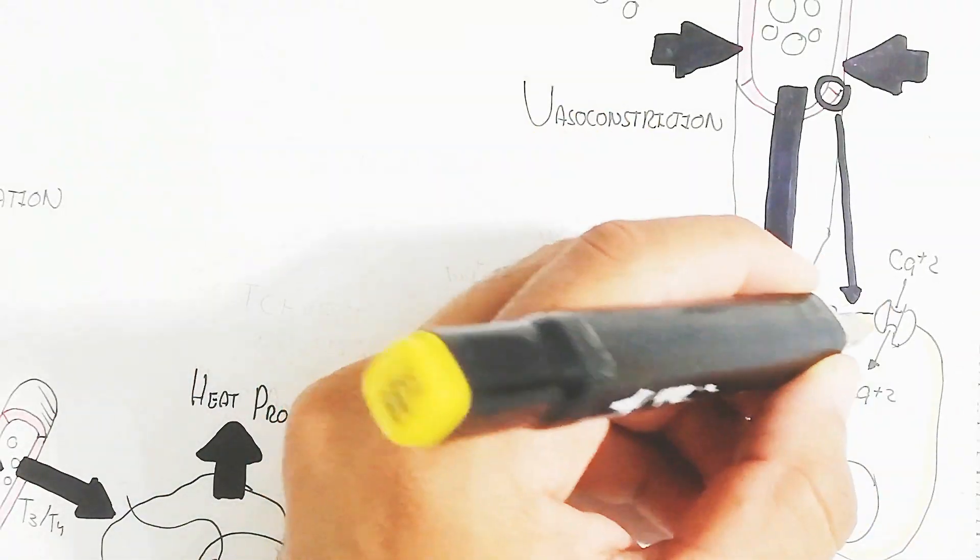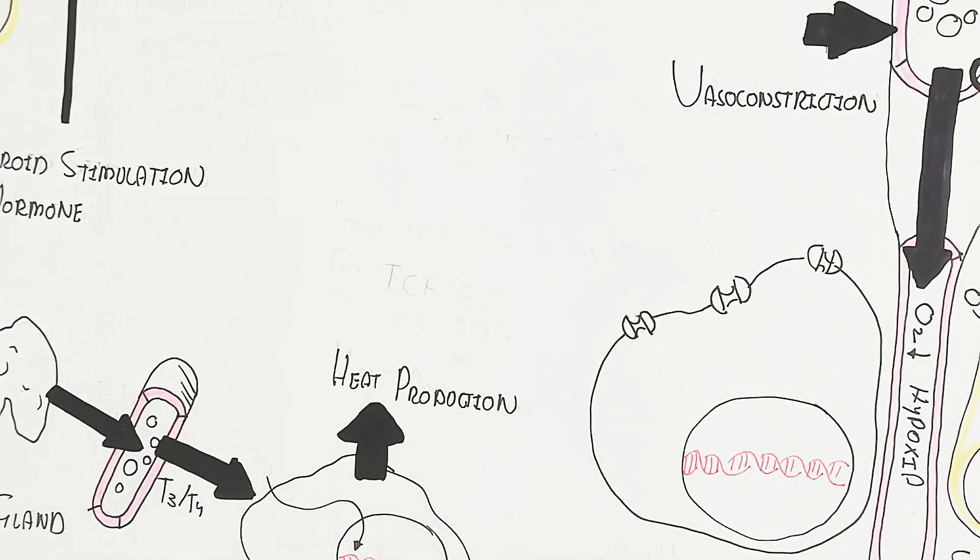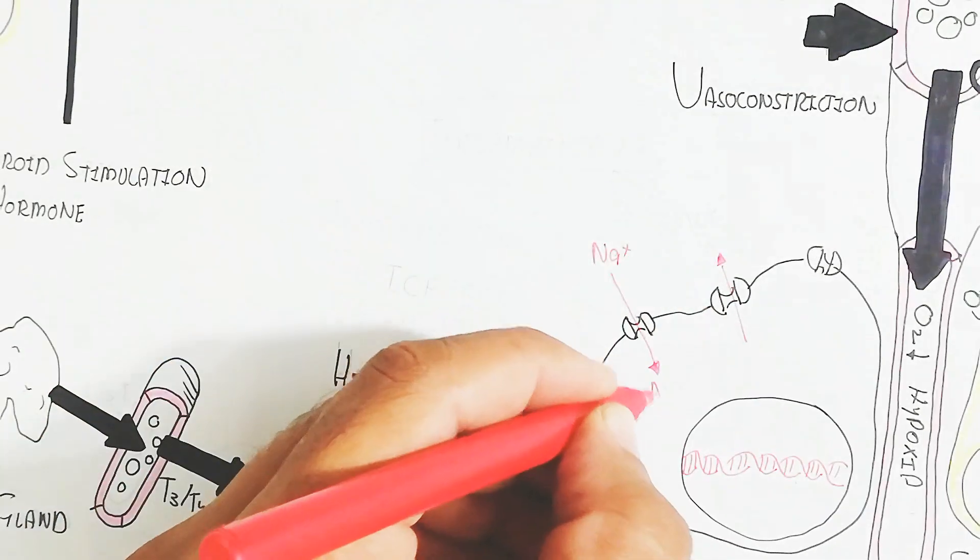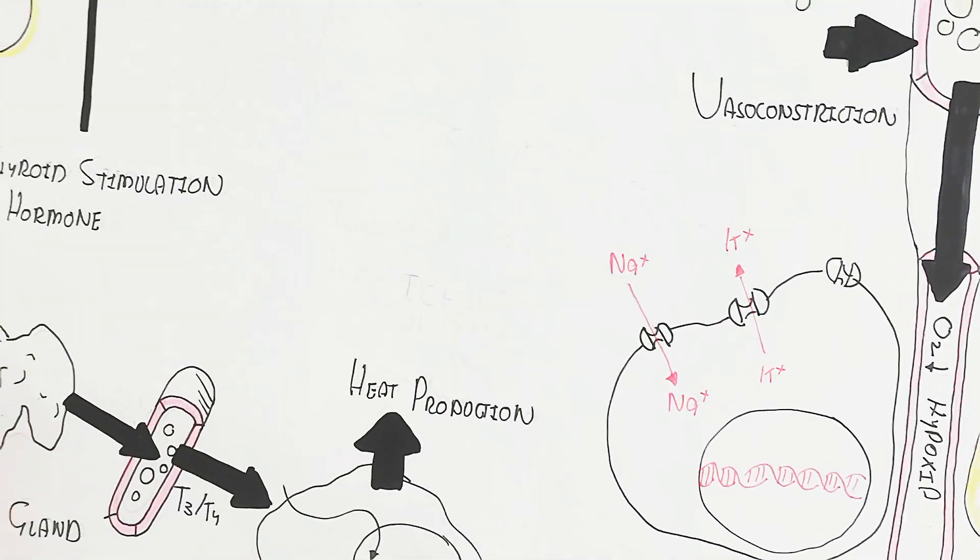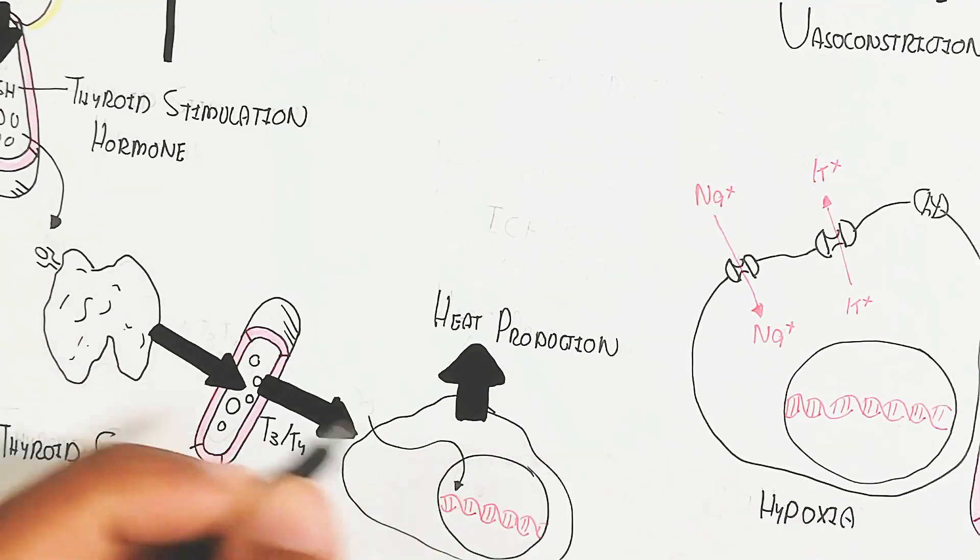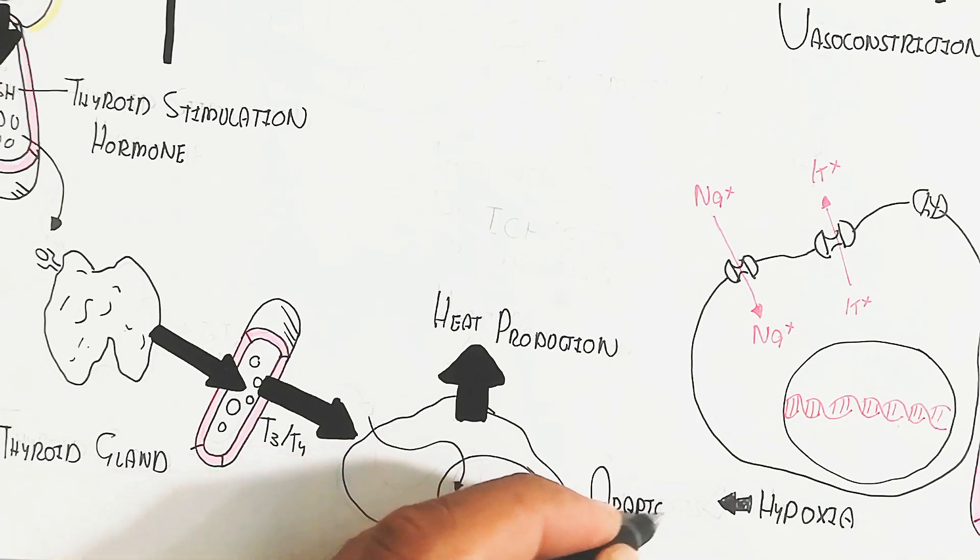So in this way, this is the peripheral cell. Let's begin to understand what is the function of peripheral cell. So already I have discussed about the hypoxia. In this way, not too much oxygen will diffuse, so the aerobic respiration will inhibit, anaerobic respiration increase.